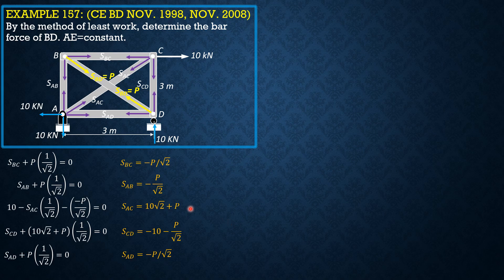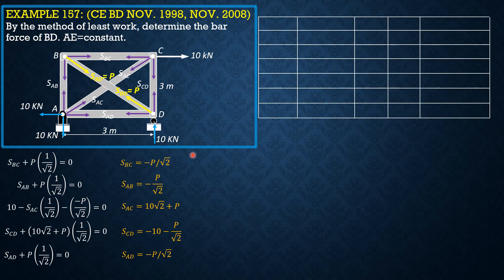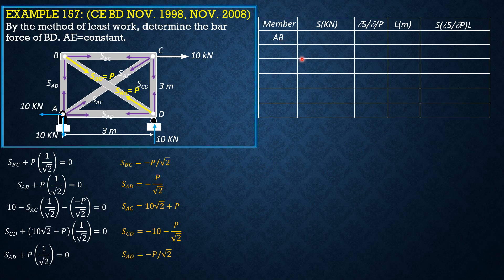We now tabulate. There are six members including BD. The columns are: member, S in kilonewtons, partial of S with respect to P, length in meters, and the product S times (∂S/∂P) times length. In alphabetical order, member AB has force negative P over square root of 2, derivative negative 1 over square root of 2, length 3 meters, so the product is 1.5P.